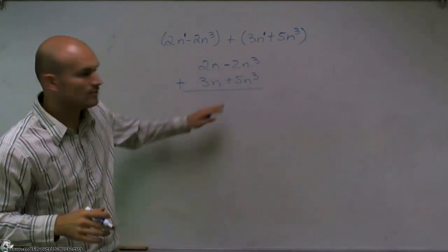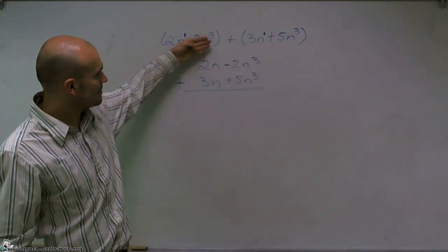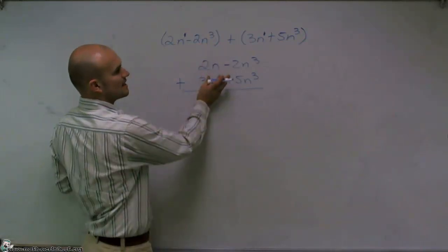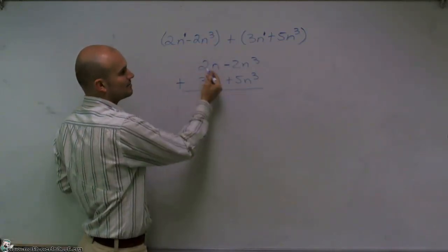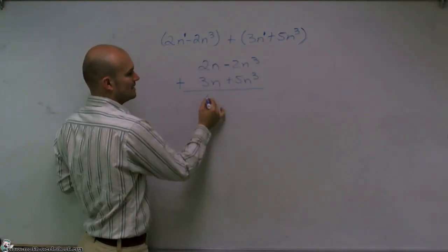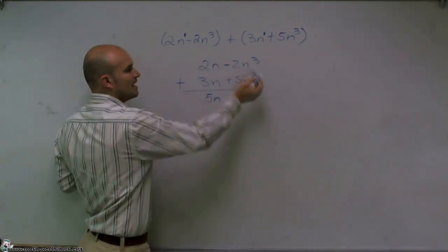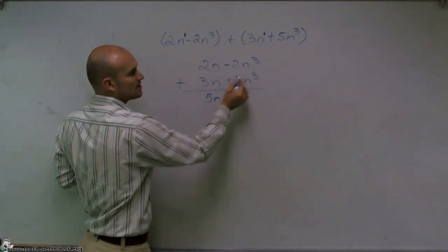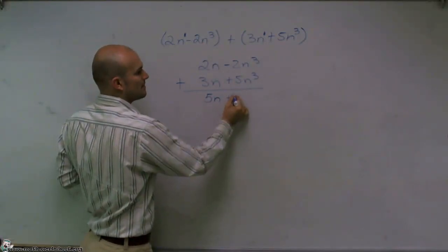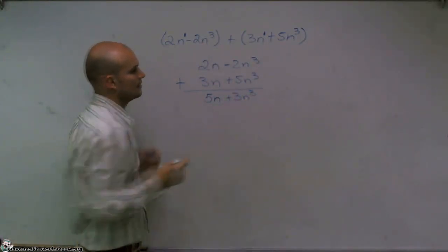So as you can see, what I'm now going to do is simply add across. Since these are the exact same terms, I can just simply add them. 2n plus 3n is going to give you 5n. And then a negative 2n cubed plus 5n cubed gives you a positive 3n cubed.